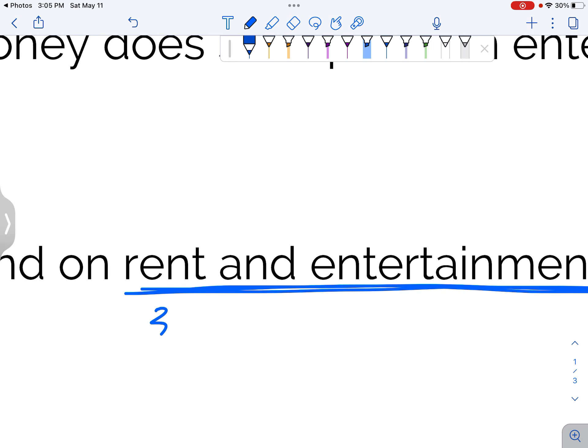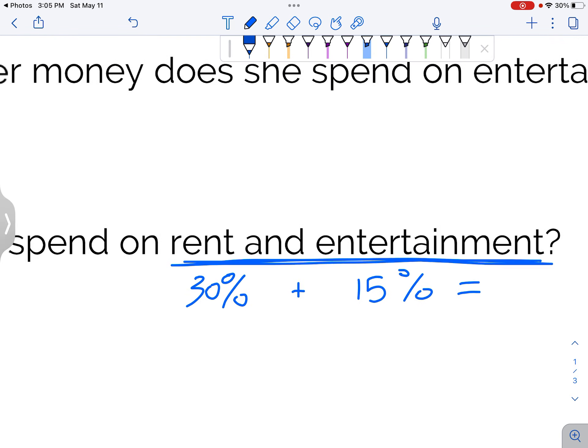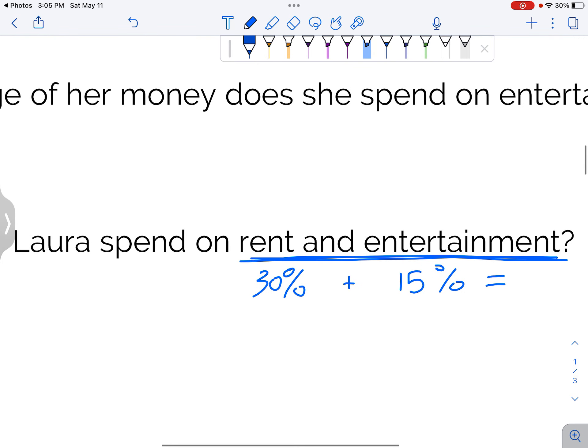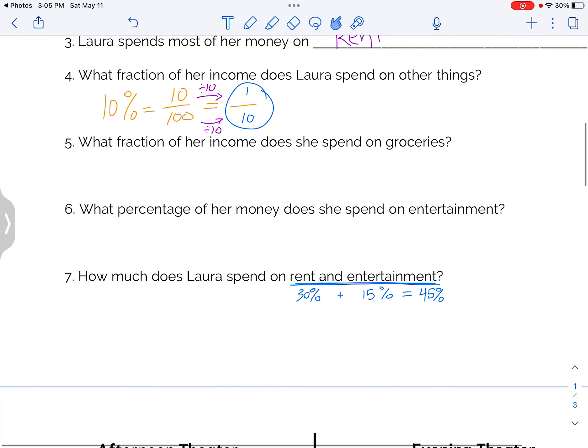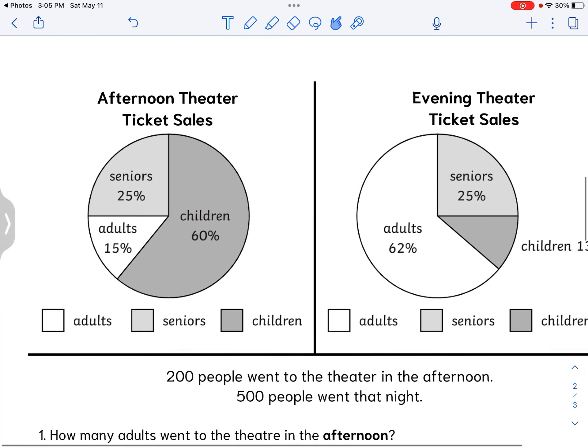That was 30% plus 15%. So you can find them out separately or you can add them together and find 45% of her income. Don't forget to check your answers by the door. And also don't forget that there is a backside to this sheet as well.